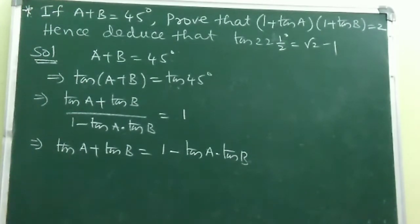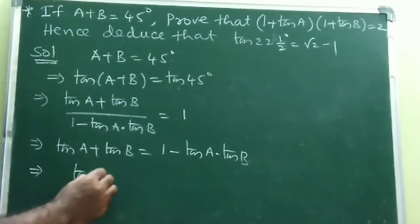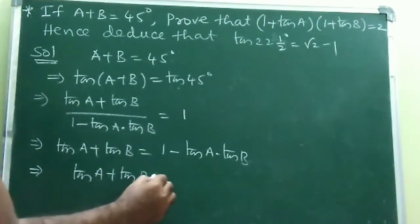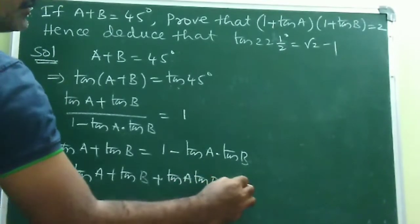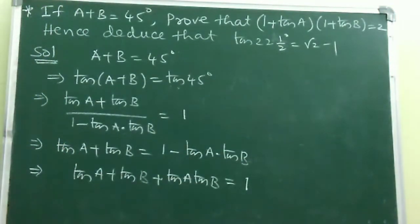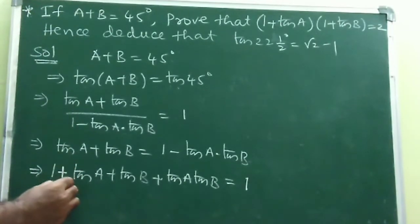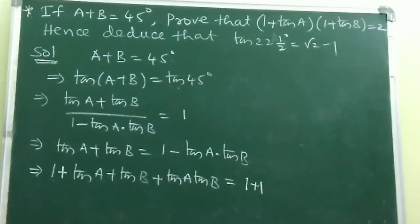Rearranging: tan A + tan B + tan A·tan B = 1. The next step is very important — add 1 on both sides: 1 + tan A + tan B + tan A·tan B = 2.